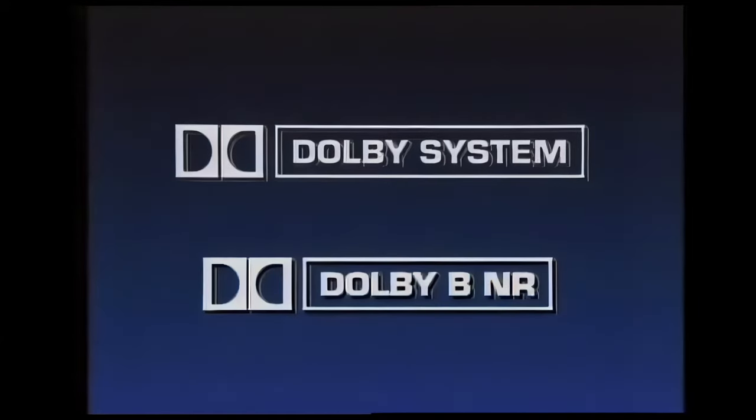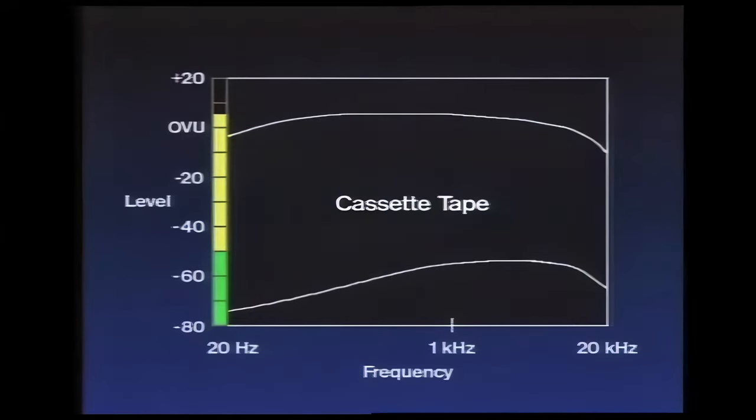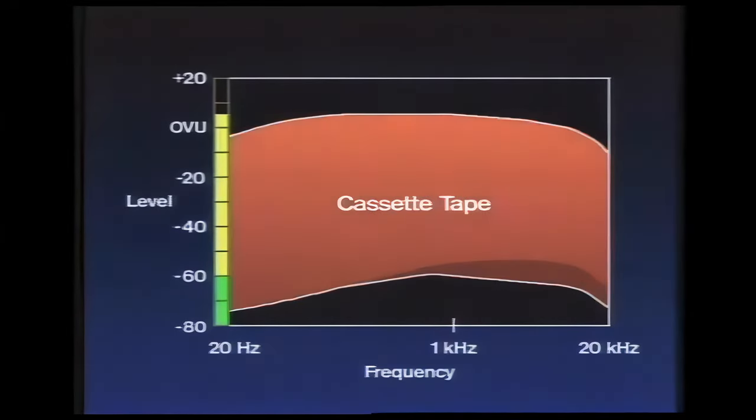B-Type NR was the first Dolby system for consumer products, and is today virtually standard in the cassette format. Many products now display the newer Dolby BNR logo. B-Type NR provides a 10 dB reduction in the most audible range of tape noise.